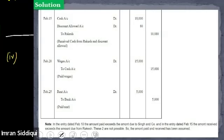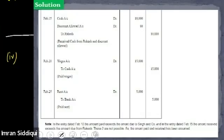A student comments that there are a lot of rules to remember for journal entries. The teacher clarifies: there are only three rules — remember the traditional accounting rules for personal account, real account, and nominal account. That is all you need.